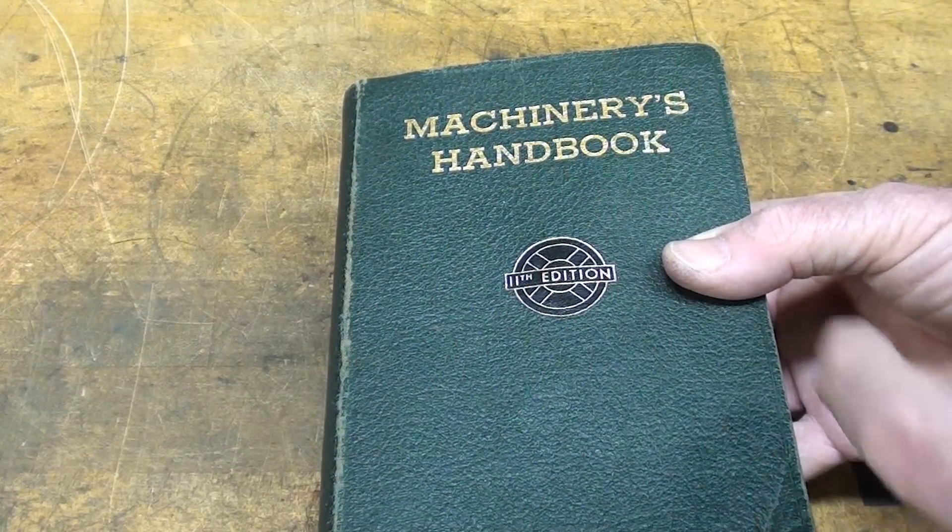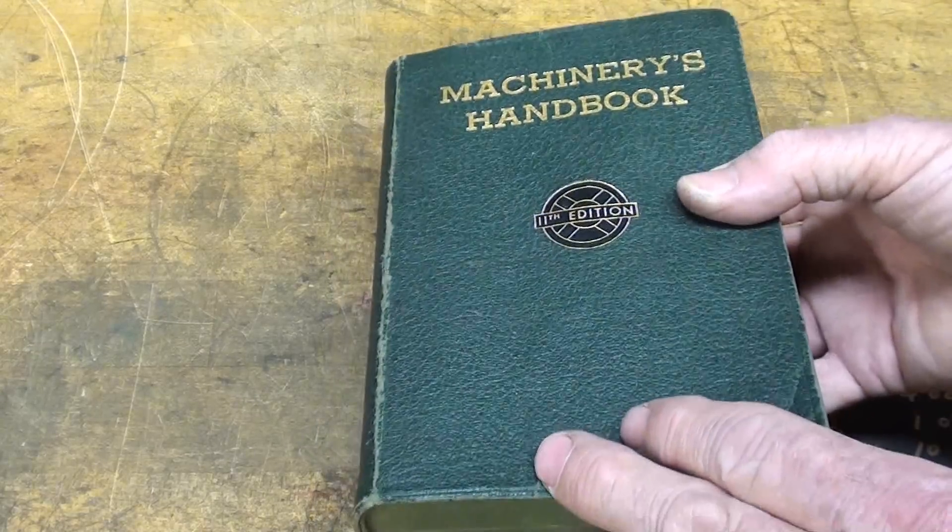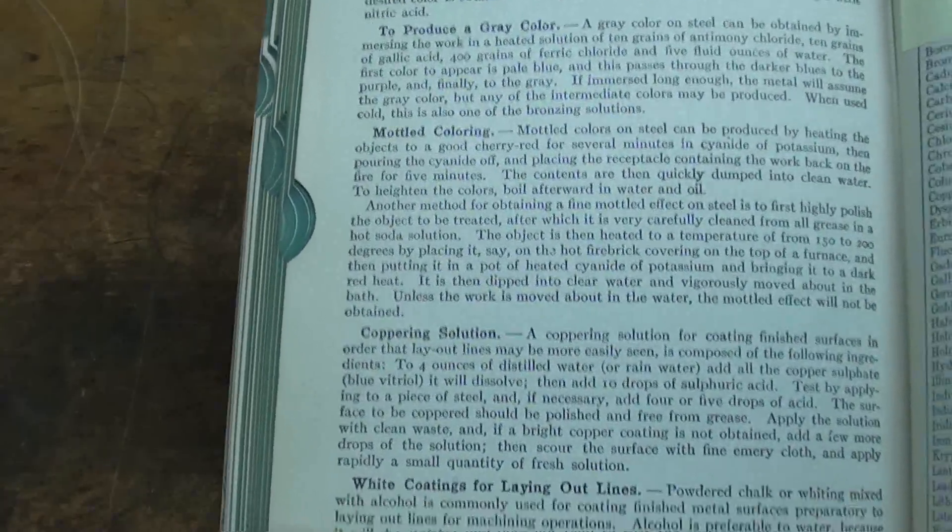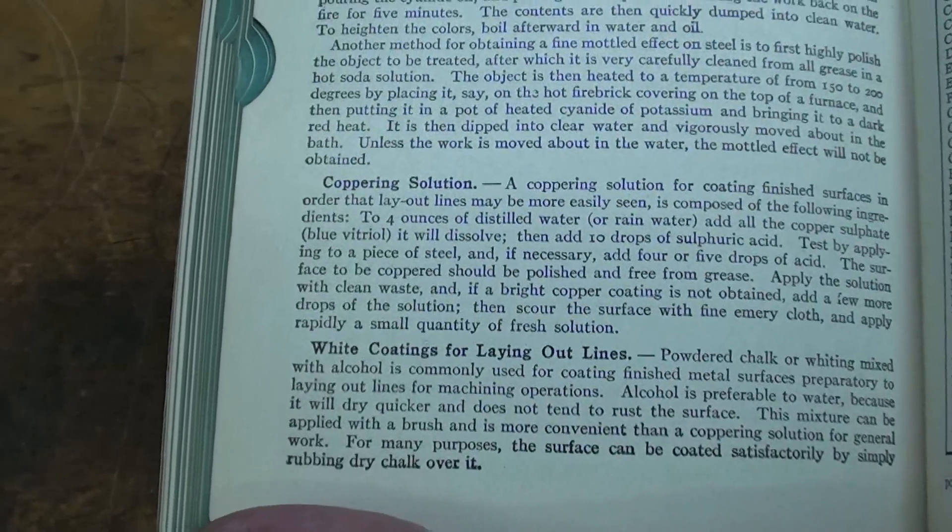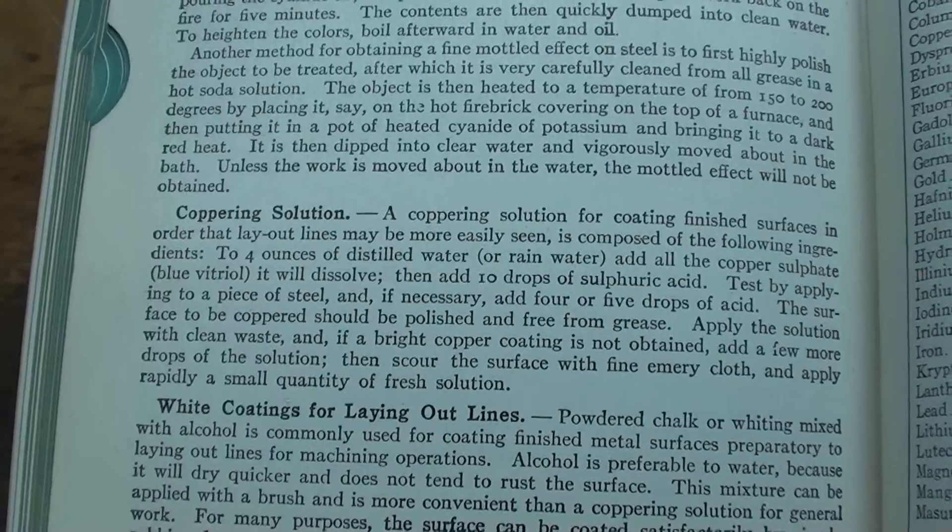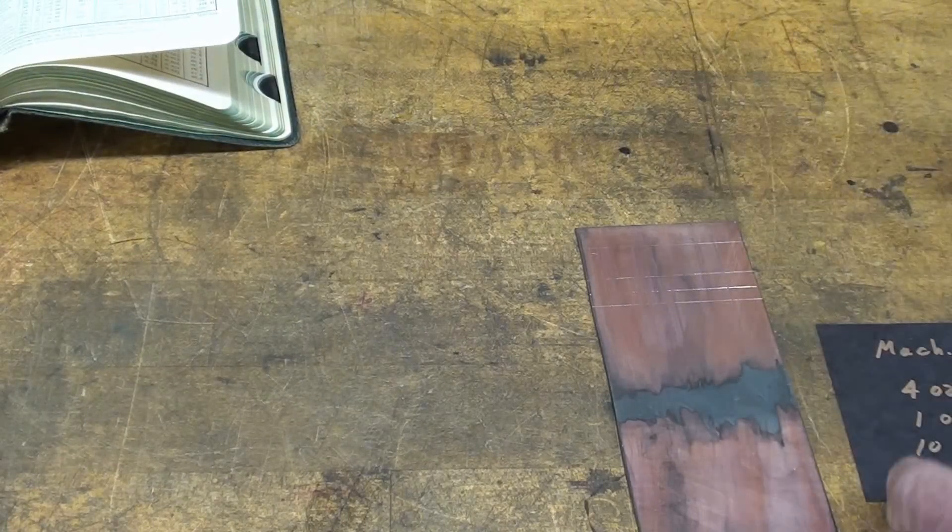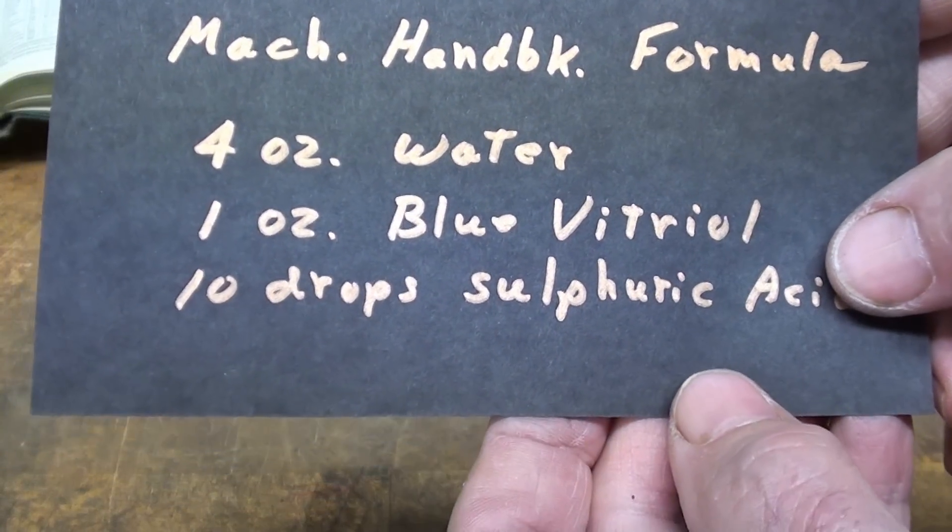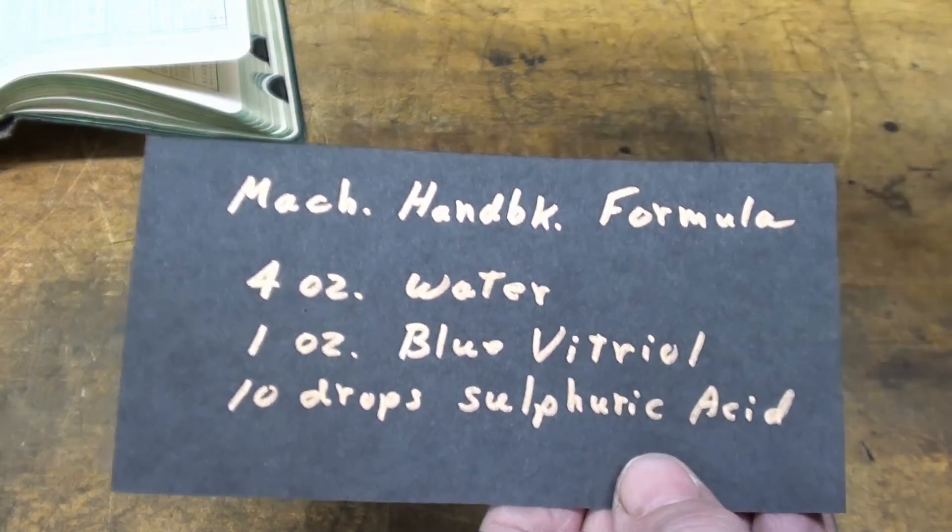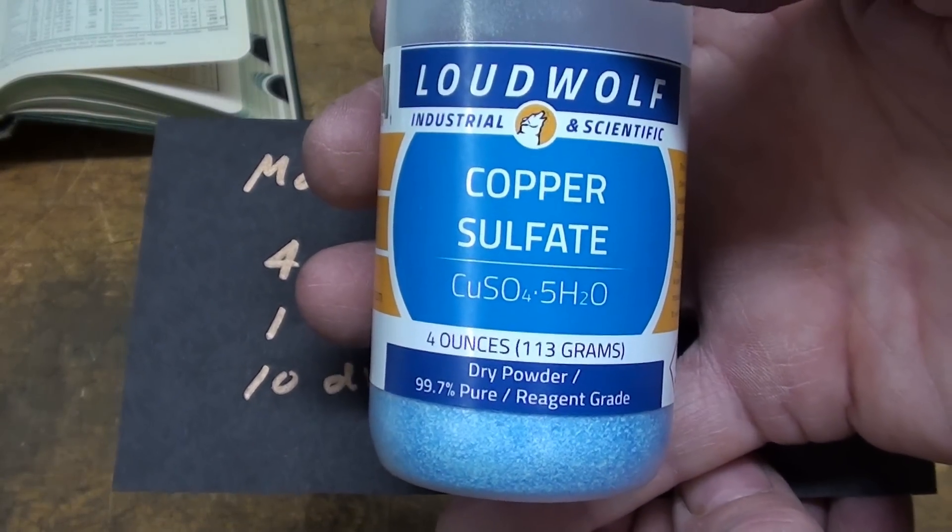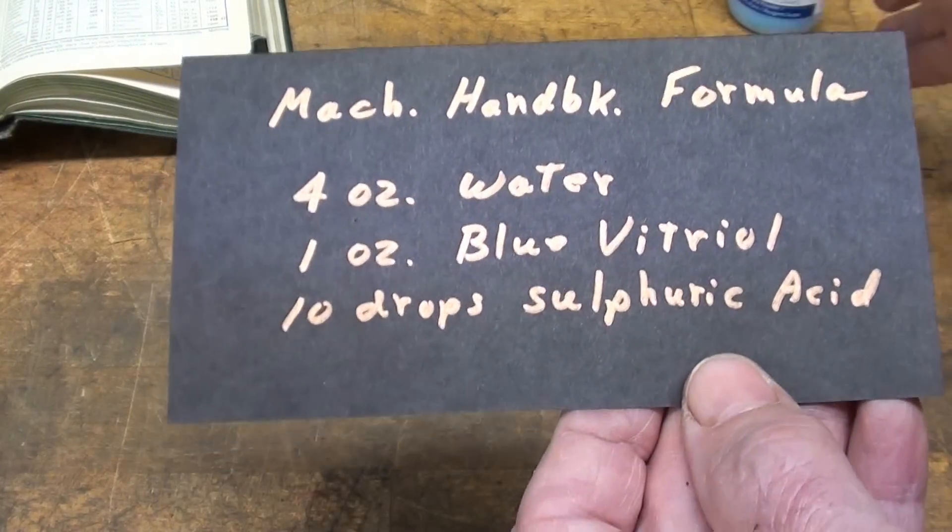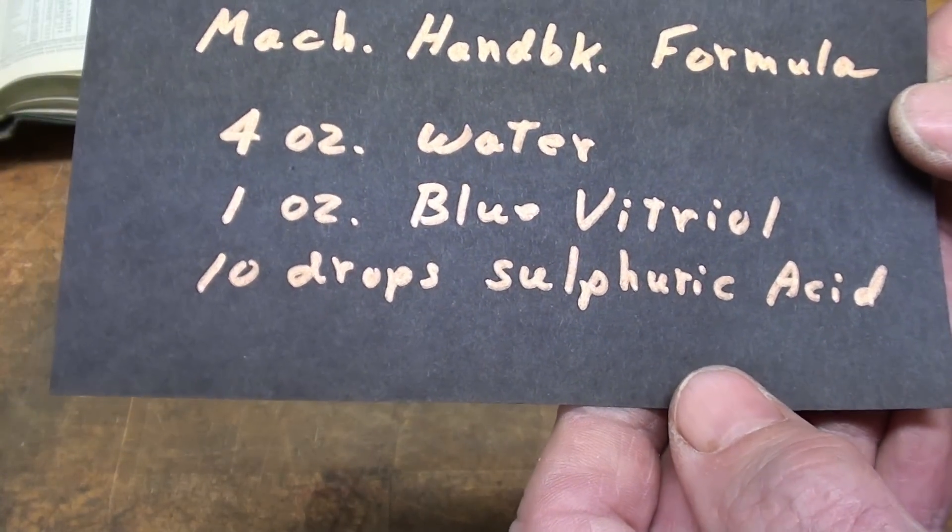I have three or four copies of Machinery's Handbook but this is an older one, 11th edition from 1942 during the war. There are different ways of coloring and coating metal, and at the bottom there's the copper solution I'm going to use. The formula is four ounces of distilled water, one ounce of blue vitriol - they don't call it that anymore but that's copper sulfate (CuSO4) - I bought that over eBay for about five or six dollars including shipping.